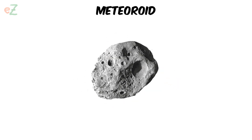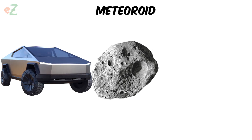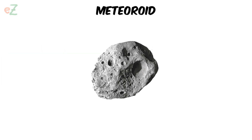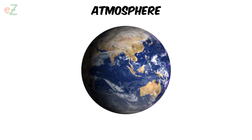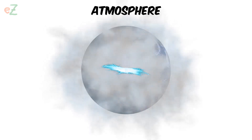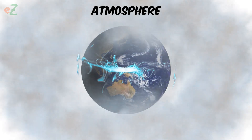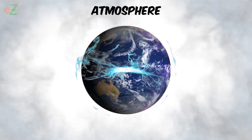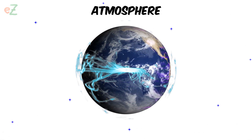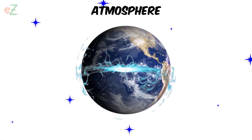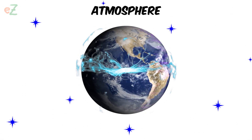Meteoroid. A little chunk of rock in space smaller than a cyber truck. If it were bigger, it would be an asteroid. Atmosphere. The gases held by gravity around Earth and around other planets. Atmosphere can also be used to talk about gases around stars.